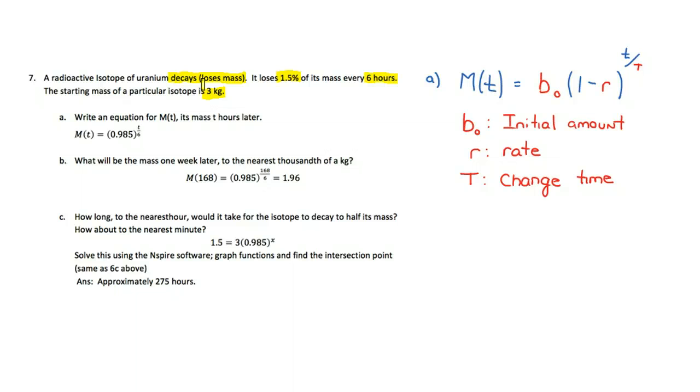With exponential relationships, there's actually a nice formula we can use. I'm going to use a formula here, but I do always stress it's really important that we understand where it comes from and why it works the way it does. The formula looks like this: The mass as a function of time is equal to B0 times 1 minus R to the power of T divided by capital T.